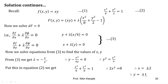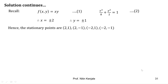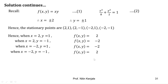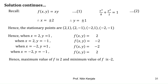From x = ±2 and y = ±1, we form all possible stationary points: (2,1), (2,−1), (−2,1), and (−2,−1). Substituting these into f = xy: for (2,1), f = 2; for (2,−1), f = −2; for (−2,1), f = −2; and for (−2,−1), f = 2. Out of these four values, 2 is the biggest and −2 is the smallest. So the maximum value of f is 2 and the minimum value of f is −2.